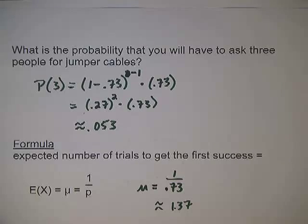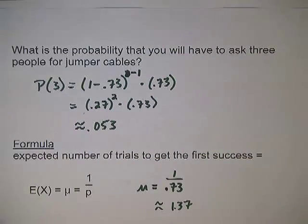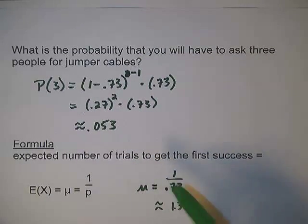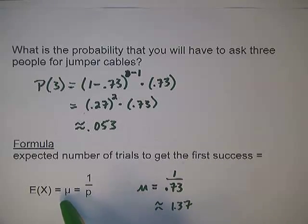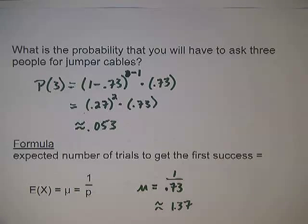In this tutorial, we calculated a geometric probability and figured out the expected number of trials to get the first success — the mean, or expected value, of a geometric distribution. That has been your tutorial on the geometric distribution.